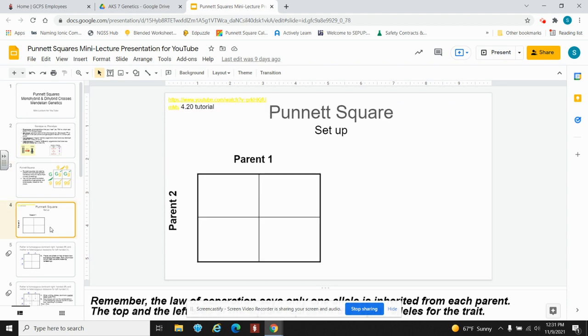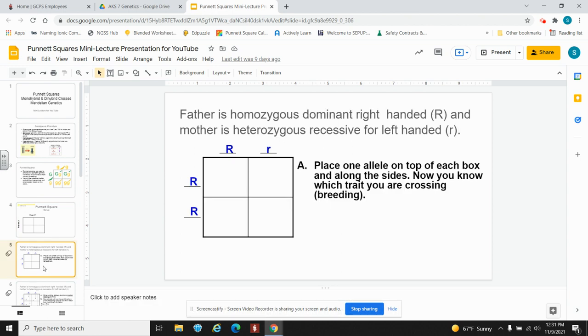Copy the Punnett square on your paper and follow along. Remember Mendel's law of separation says that only one allele is inherited from each parent. The top and the left of each box represents the parent's genetic information. Write an allele at the left and the top outside of the boxes. The boxes themselves represent the offspring and the predicted genotype of one offspring.